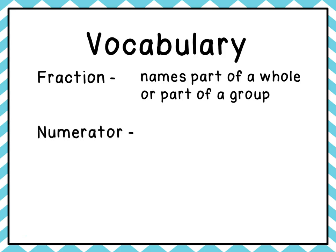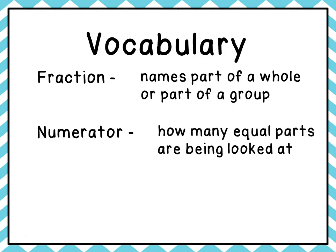The next word is numerator, and the numerator is how many equal parts are being looked at. For example, in my family there are seven people and there are two girls. So if I ask what fraction of my family are girls, the numerator in that fraction would be two, because there are two girls.